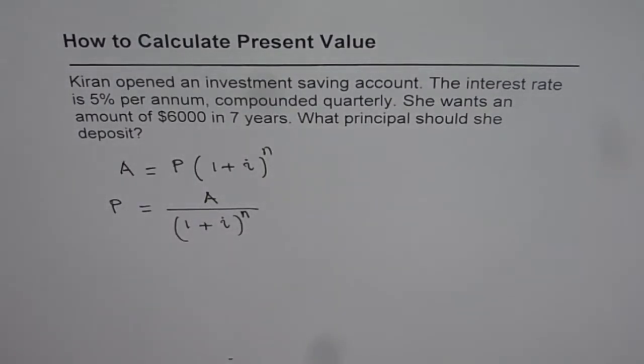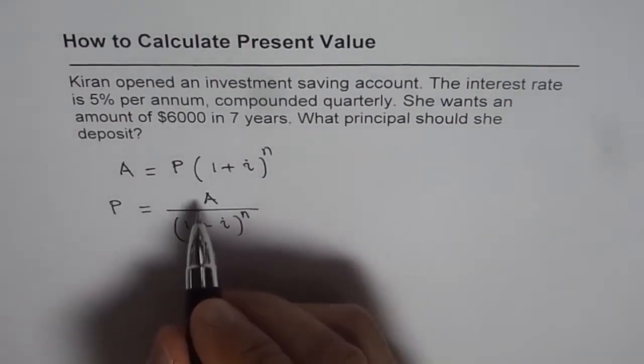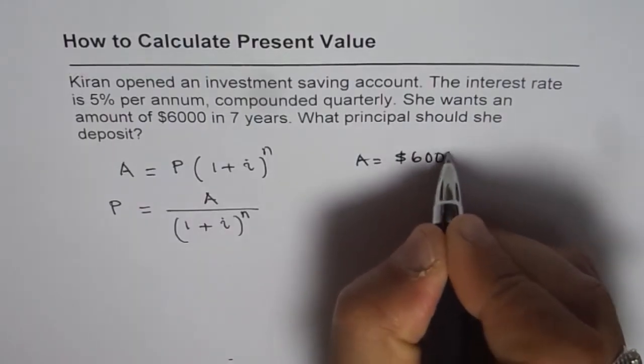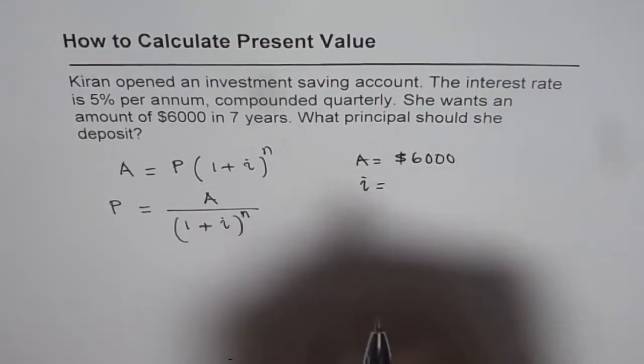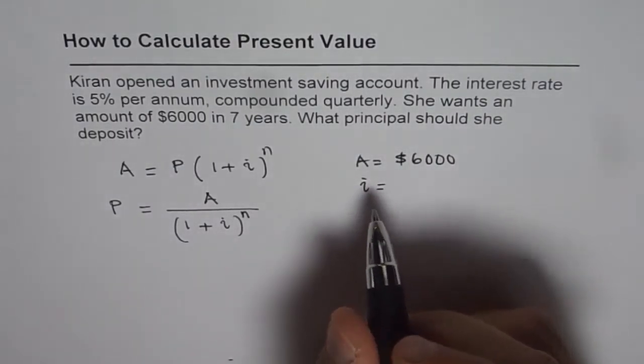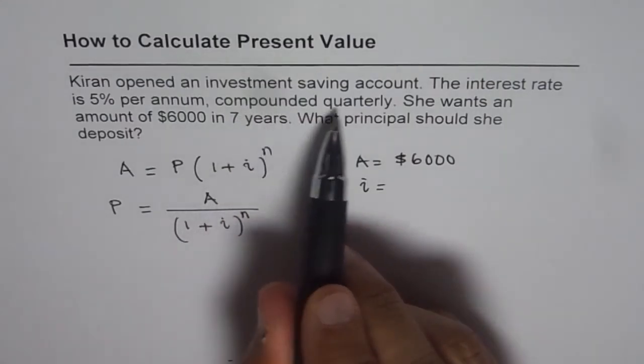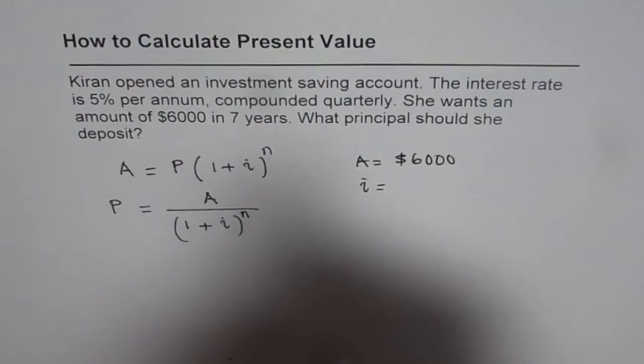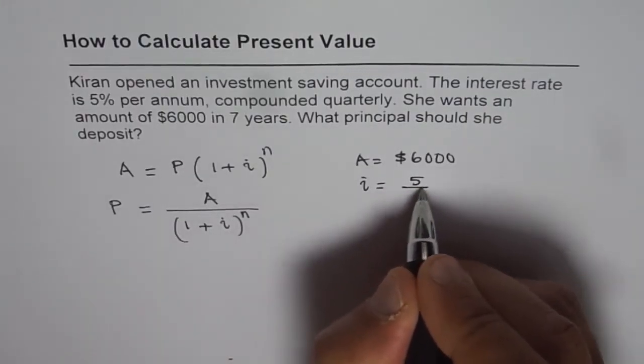Now let's figure out what is i and n for this particular question. Amount A we know is $6,000. i is the interest rate in decimals. Now compounding period is quarterly. 5% per annum compounded quarterly. So 5% means 5 over 100.